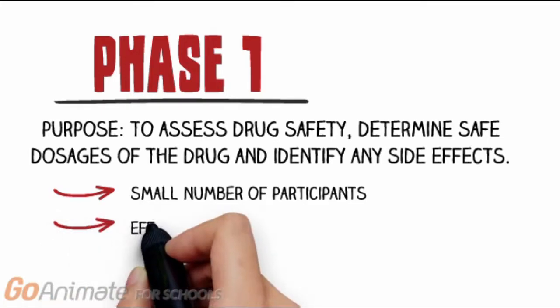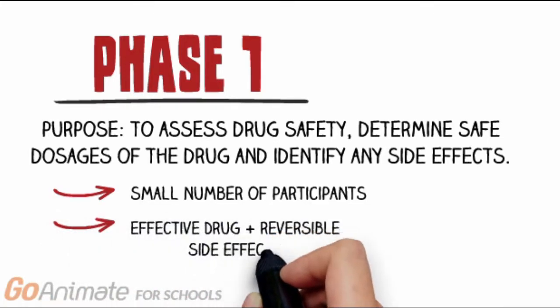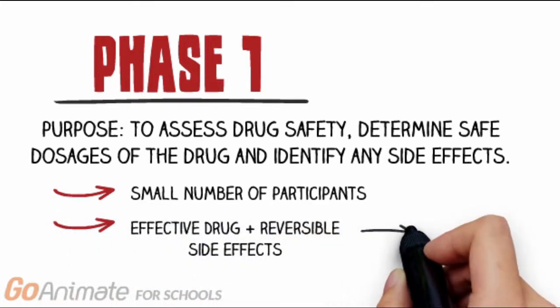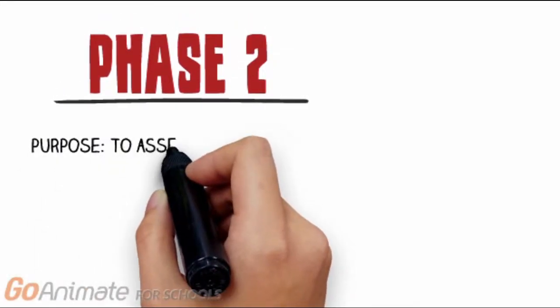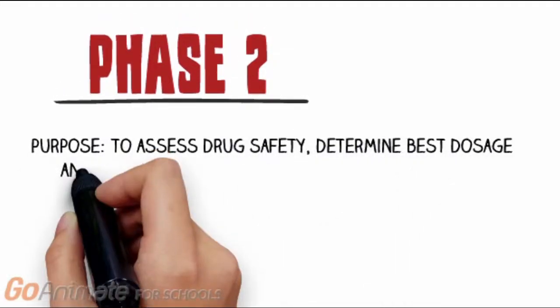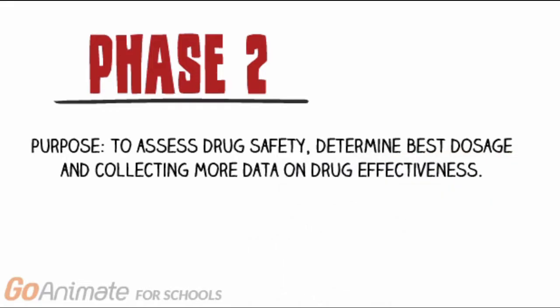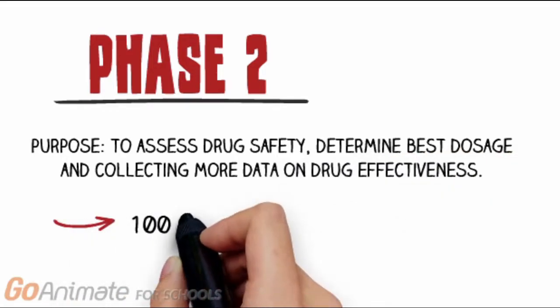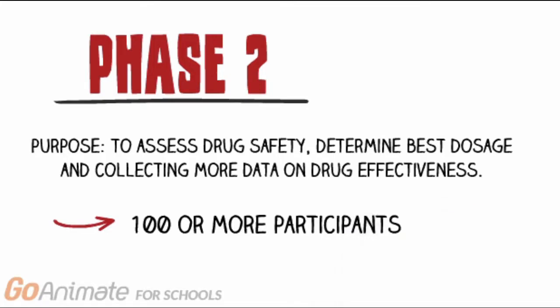If the drug is found to be effective with reversible side effects, then it will move into Phase 2. Here, the main purpose is to once again assess drug safety while determining the best dosage and collecting more data regarding the drug's effectiveness. This portion of the trial normally involves 100 or more participants.